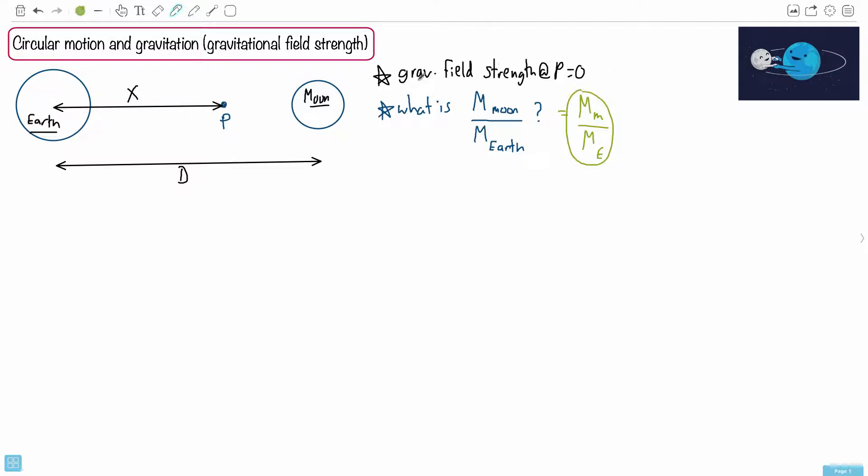Now, they told us this hint. The gravitational field strength is zero. So if you don't know how else to solve it, maybe go find yourself an equation for gravitational field strength. If you look it up in your data booklet, you should be able to find an equation that goes like this. G equals F over M. By the way, that's the gravitational field strength. It's called G.